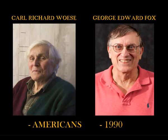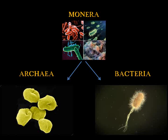In 1990, the Americans Carl Richard Woese and George Edward Fox discovered a kind of microbial life that is distinct from bacteria and the eukaryotes, which they called Archaebacteria. So, the kingdom Monera was divided into two domains — Bacteria and Archaebacteria — and the other kingdoms were grouped together in the Eukaryotes domain.